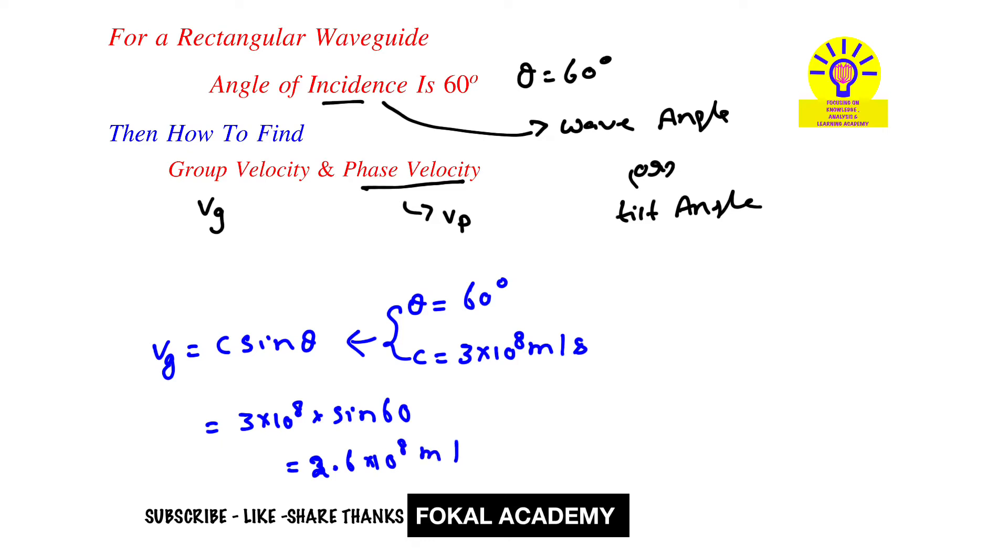Now, what is the phase velocity? We have a relation between angle of incidence and phase velocity: phase velocity vp equals C by sine theta.